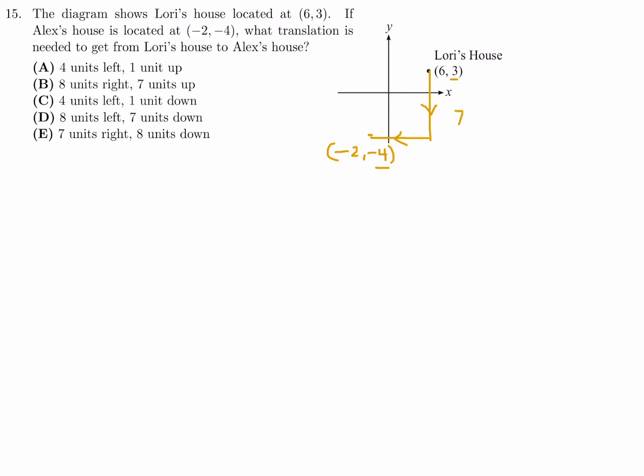When you go right, you're going from 6 here to -2. So you're going right, sorry, you're going left, 8. So down 7, and then left 8. So which one of those, choice D. 15, the answer is D.